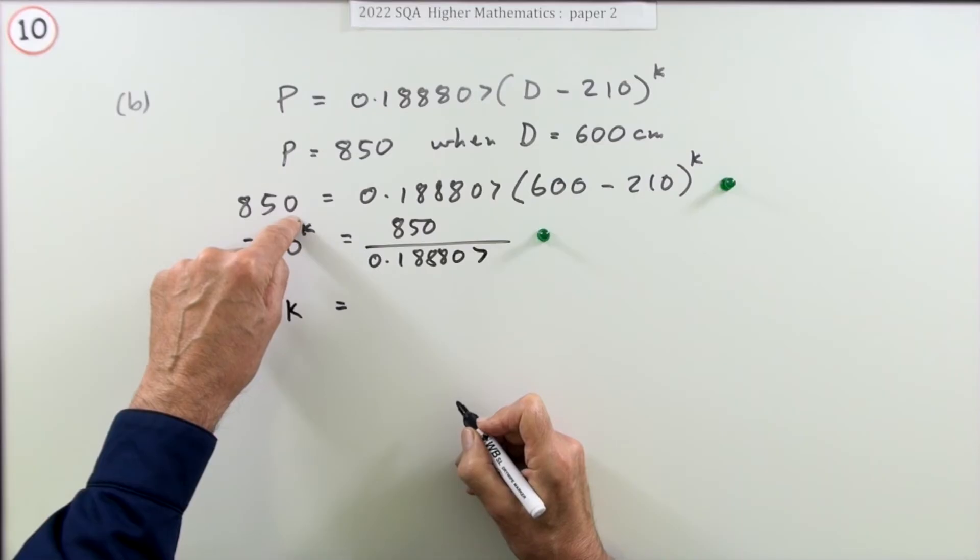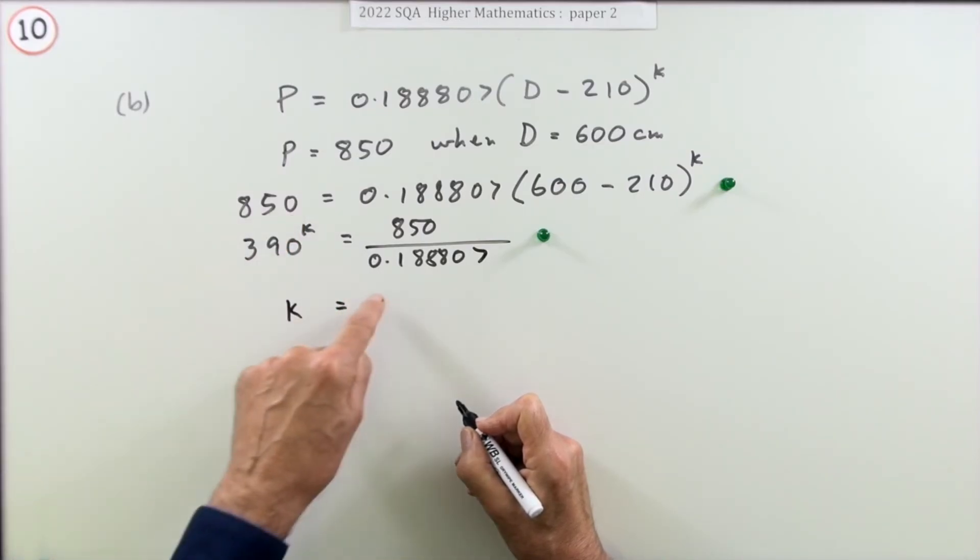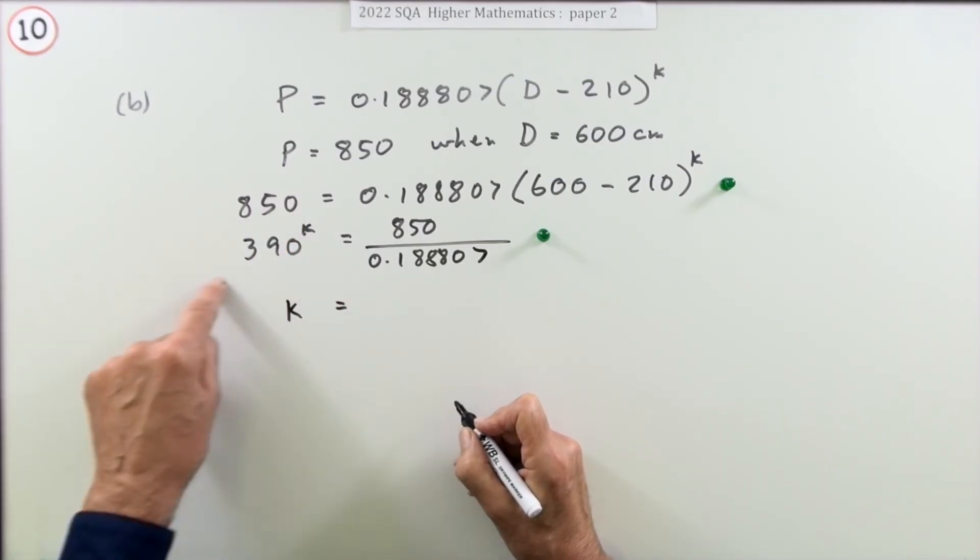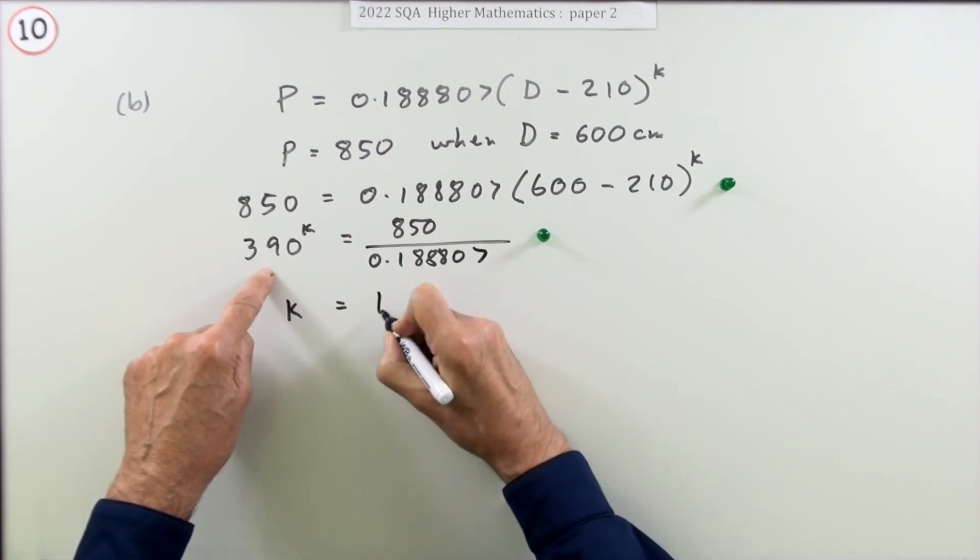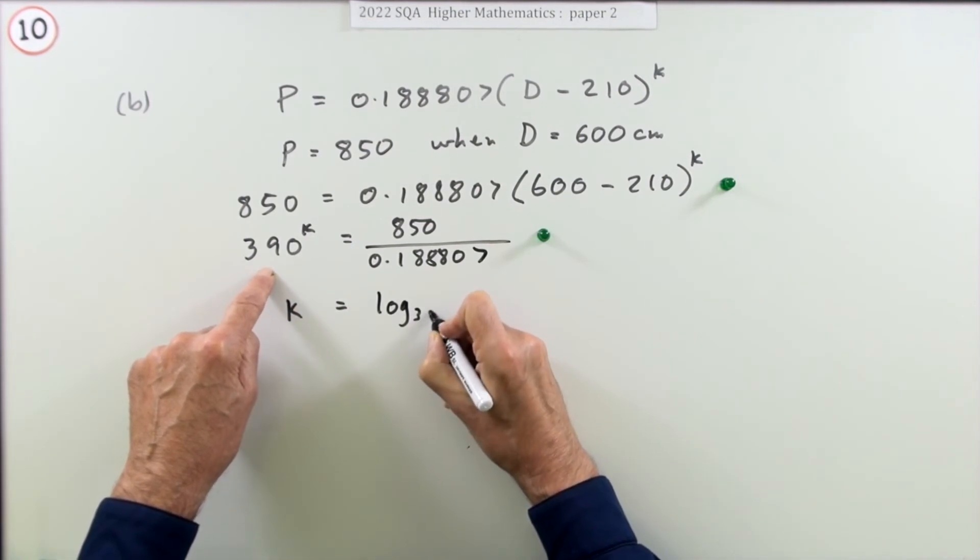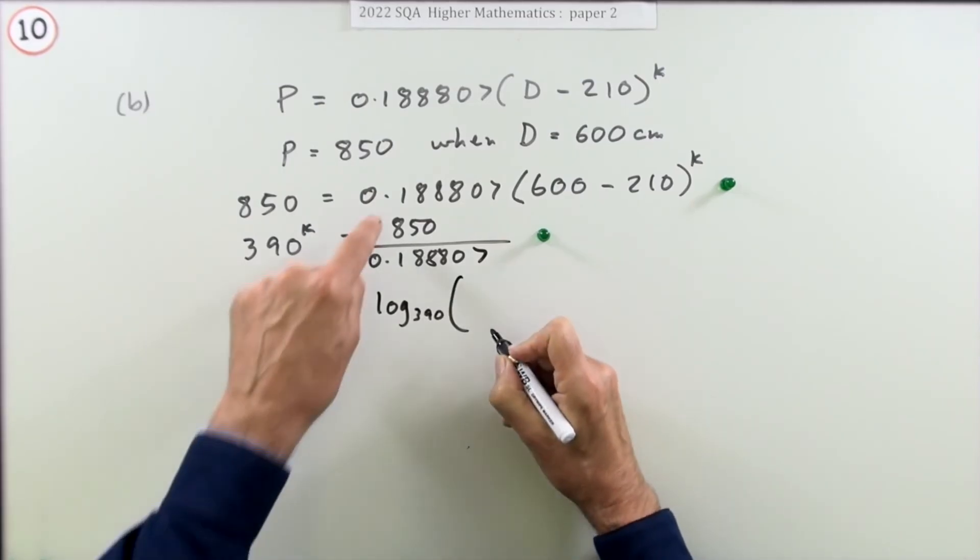Something to the power k—k would then be log base of that something. What's the base of it? It's 390. So that means you've got log base 390 of this thing.